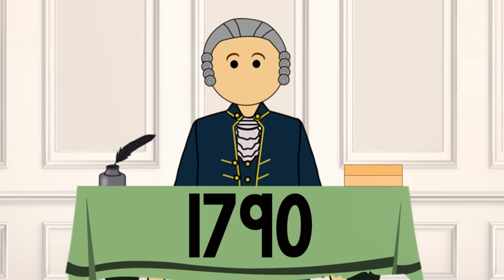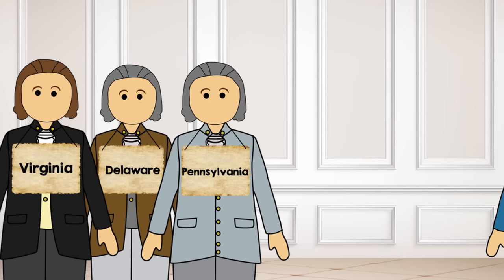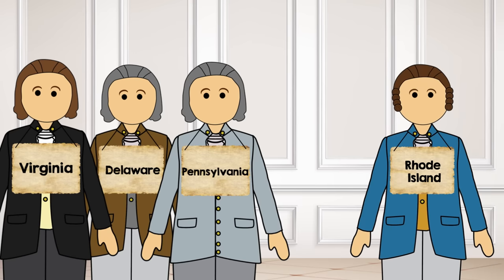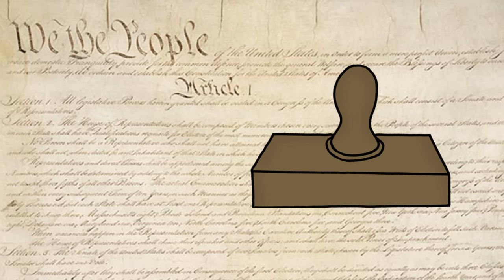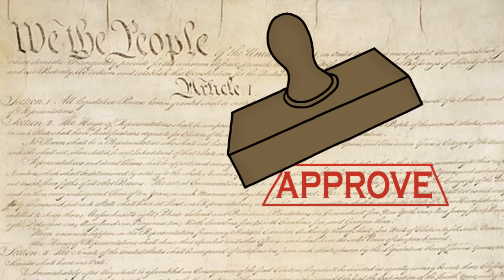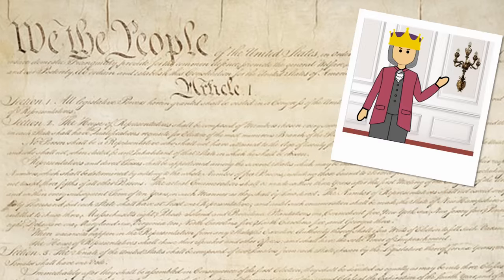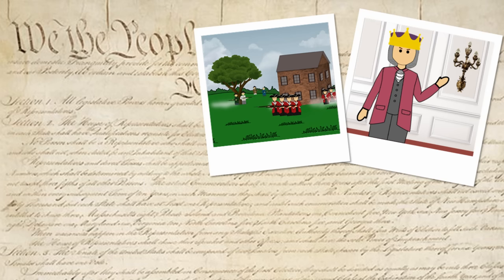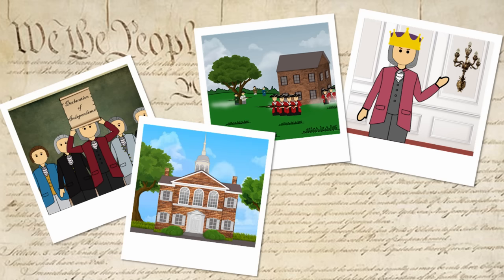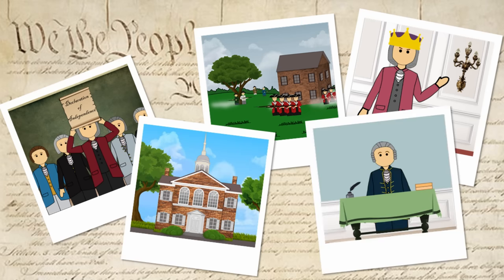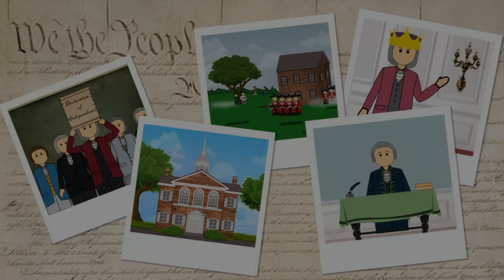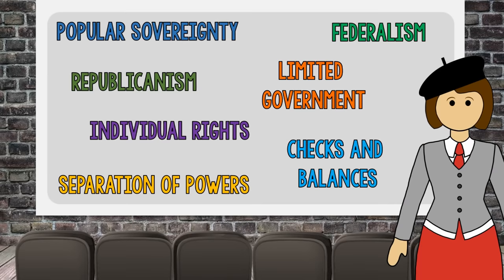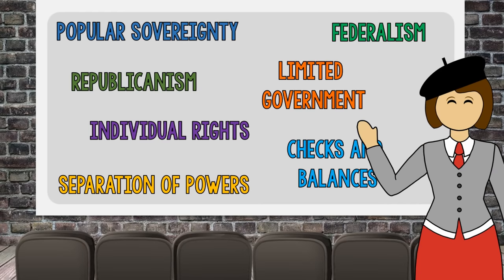The year is 1790. Rhode Island has finally ratified the Constitution, meaning that all 13 states had approved the new plan for government in the United States. The journey to get to this moment in history wasn't easy, but the document successfully established a framework for governing the country through the use of several basic principles.